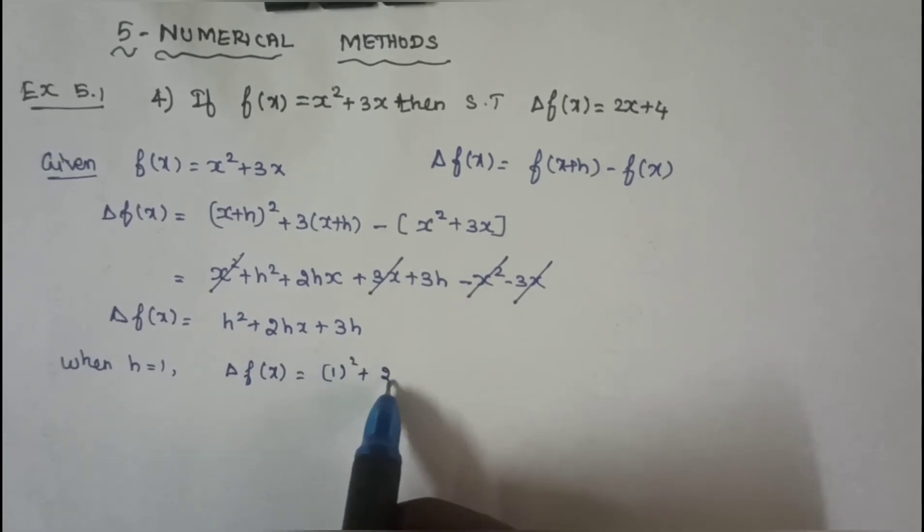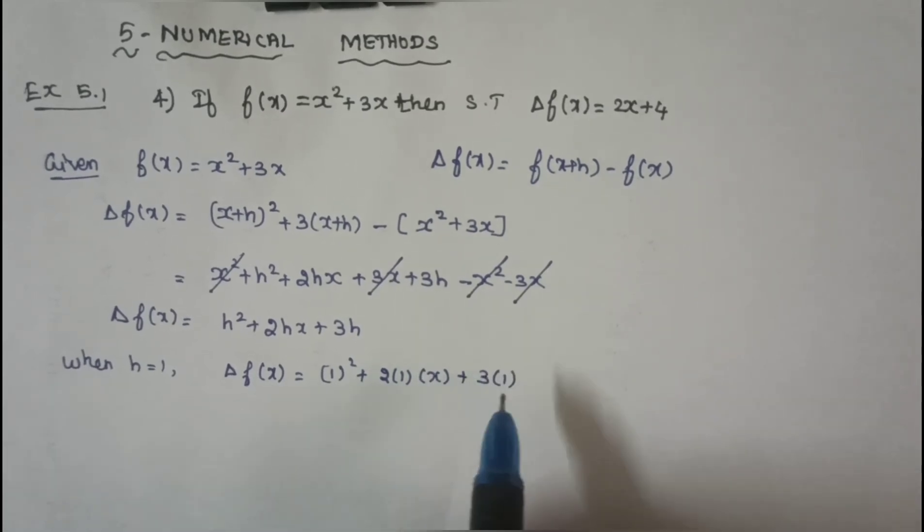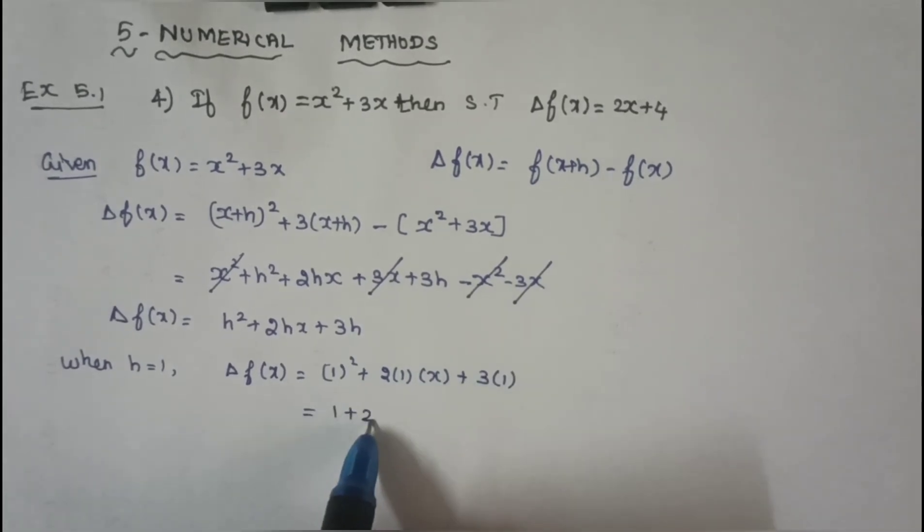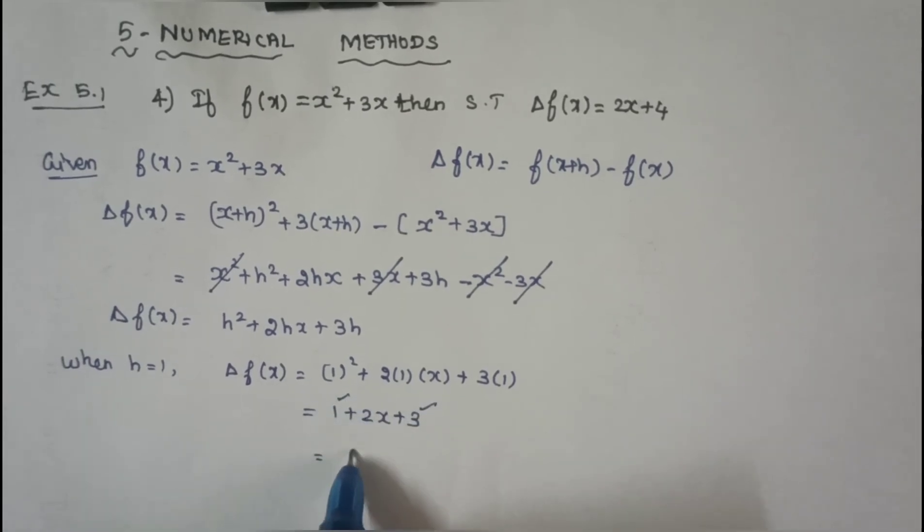1 square plus 2 into 1 into x plus 3 into 1, h equal to 1 plus 2x plus 3. 3 plus 1, so 4, 2x plus 4.